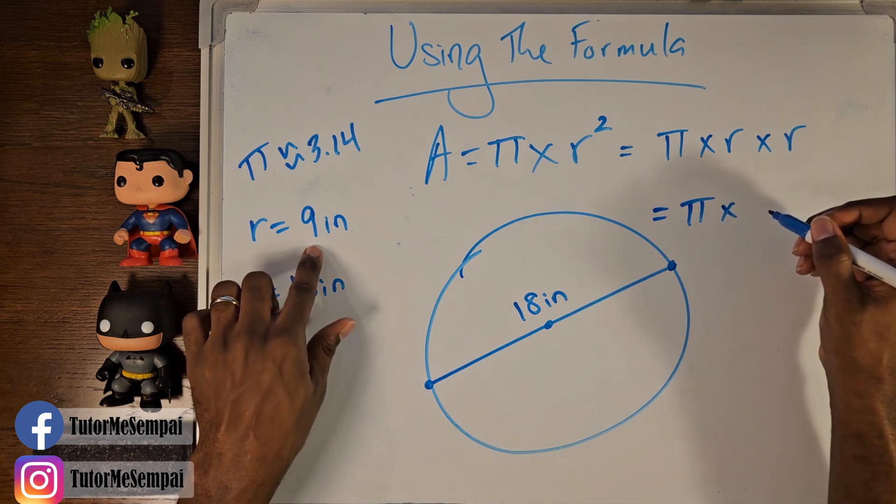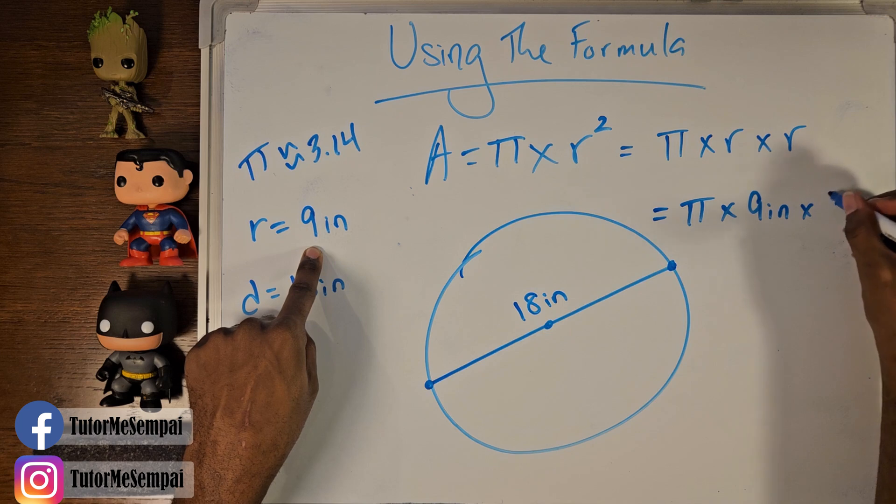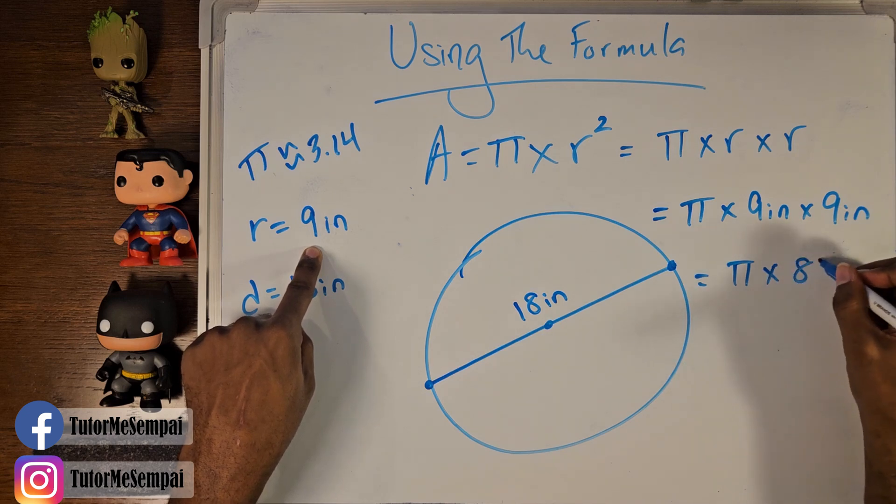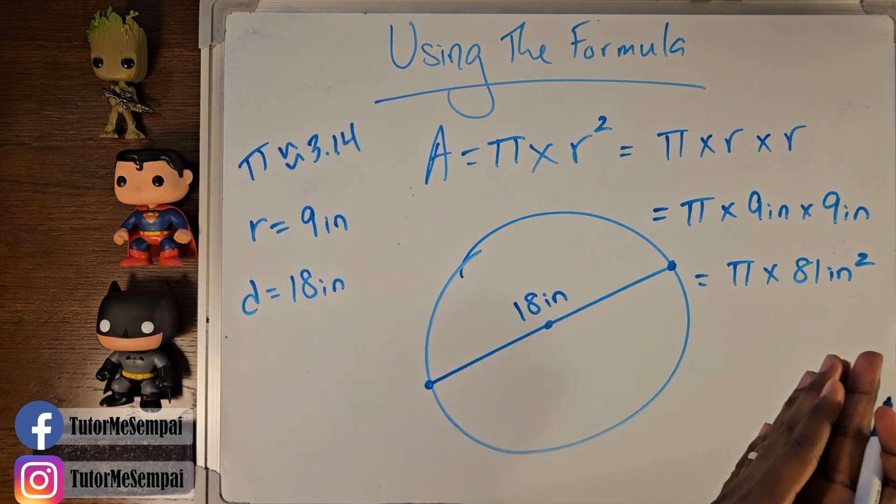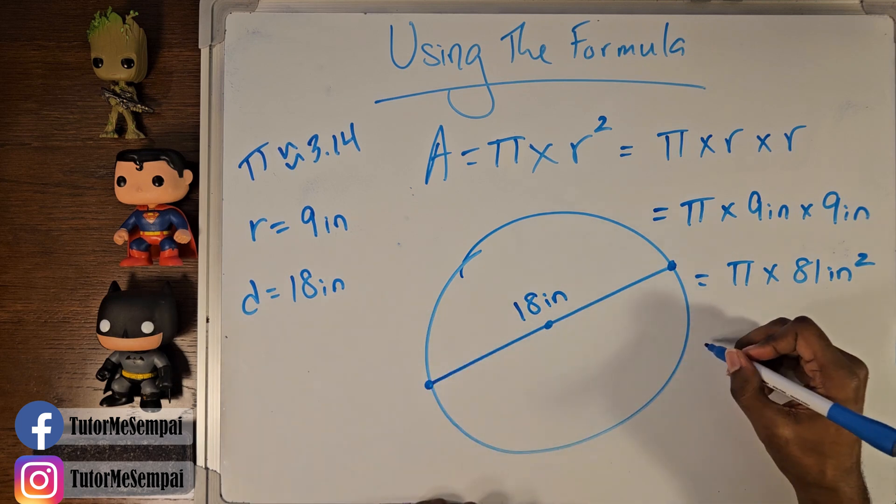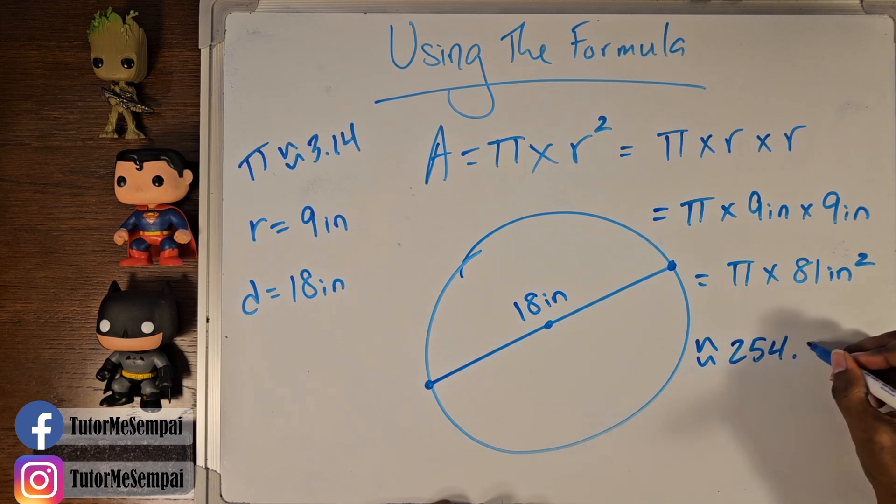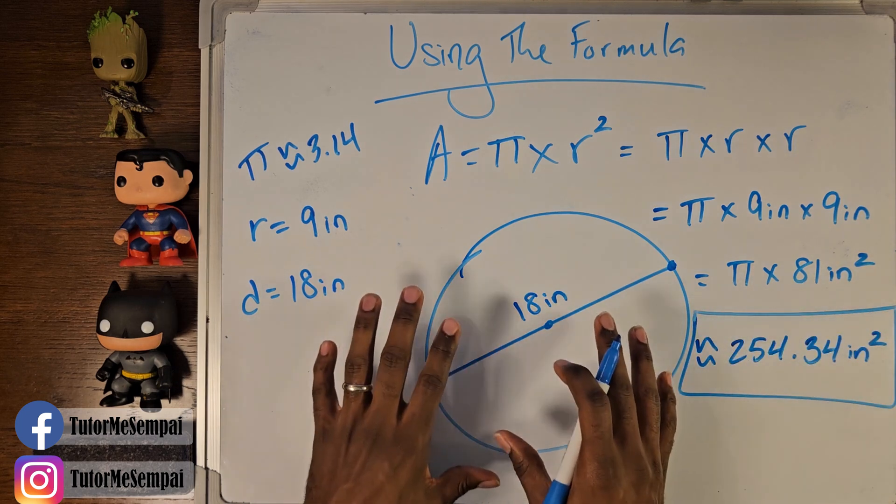Pi times, not the diameter, we're plugging radius, 9 inches times 9 inches. That's going to be pi times 81 inches squared. Don't forget your square units. This is the actual exact value, but let's say we want to round it, so an approximate value. If you plug that into your calculator, you're going to get 254.34 inches squared. This is the approximate value for the area of this circle.